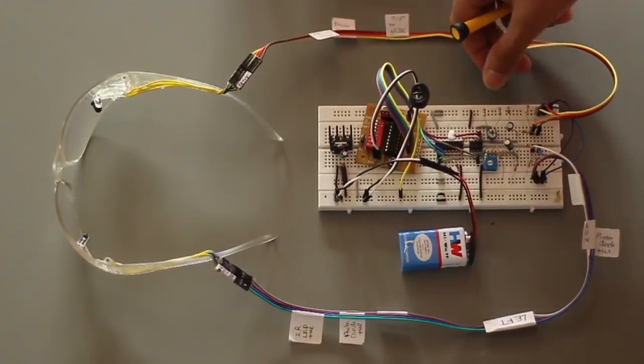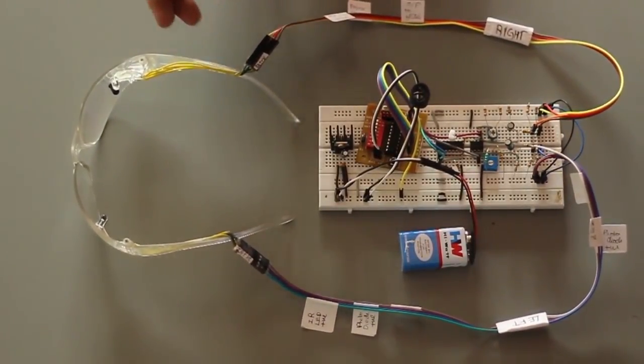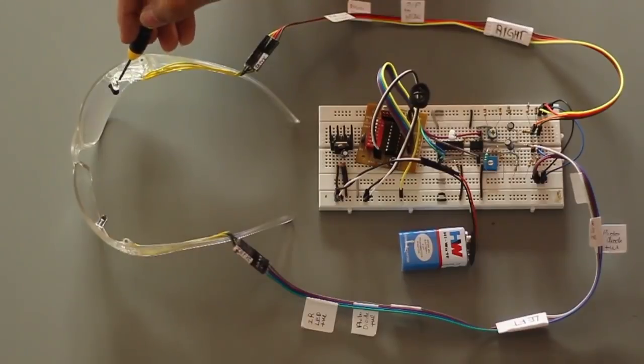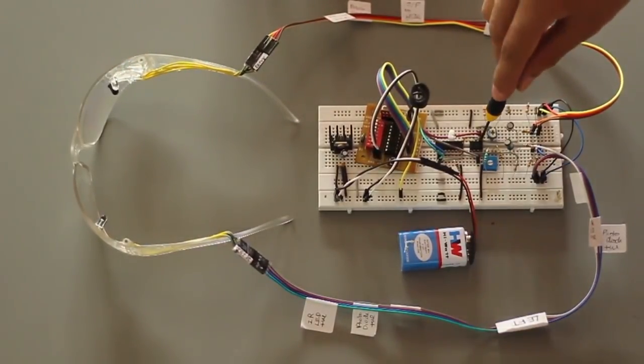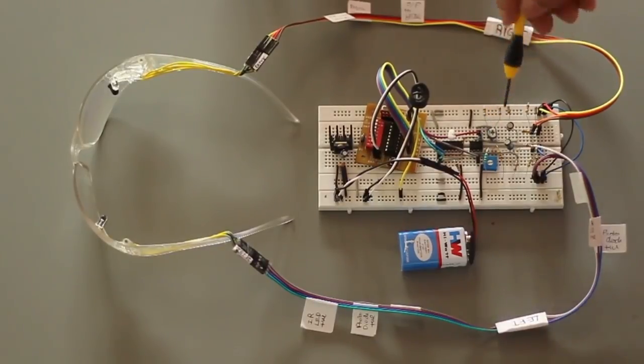This is the transmitter. The transmitter has glasses with an infrared LED and a photodiode. These feed inputs to the dual op amp over here. The sensitivity can be adjusted by these two potentiometers.